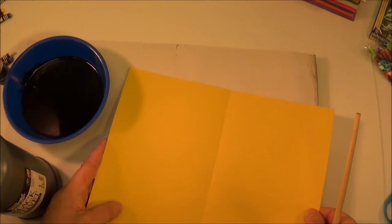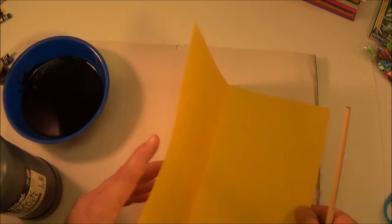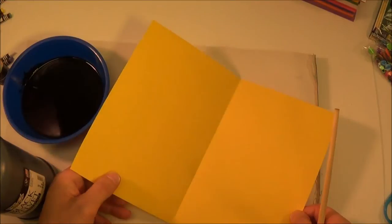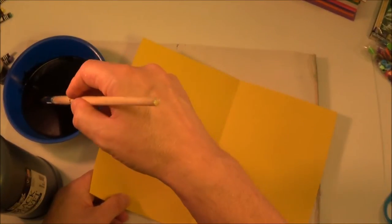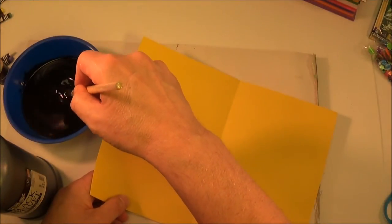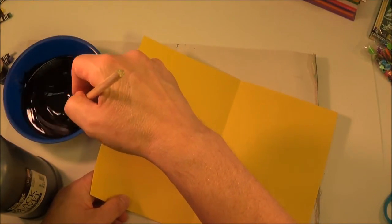Fold a 9x12 sheet of construction paper in half and unfold. Pick a nice bright color. Use a paintbrush to apply ink to one half of the sheet. Be generous - the ink should make puddles.